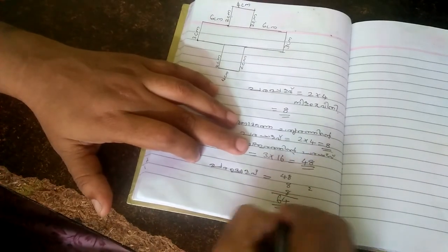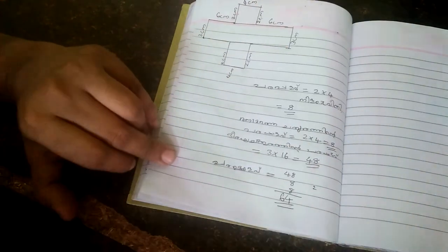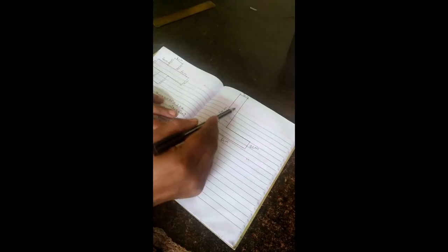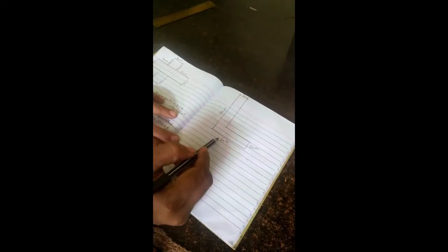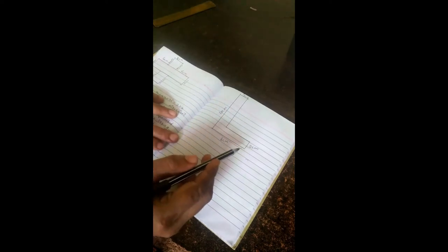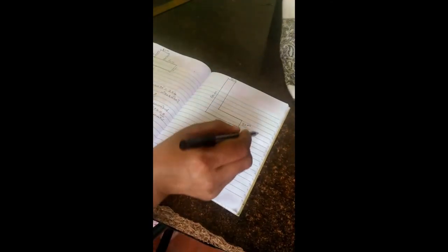So 64 surfaces are rendered in size. There are 3cm of the surface. Now we have to cut it in size. 3cm of the surface, here is 10cm of the surface. Here is 6cm of the surface. 5cm, 6cm of the surface.